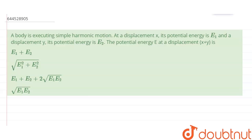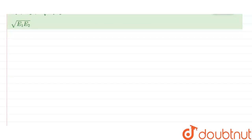Hello everyone. The question is: a body is executing simple harmonic motion. At a displacement x, its potential energy is given as E1, and at displacement y, its potential energy is given as E2. The potential energy E at a displacement of x plus y is? Now we know that in simple harmonic motion, the potential energy is given by the formula E = ½mω²x², where m is the mass, ω is angular velocity and x is the displacement.